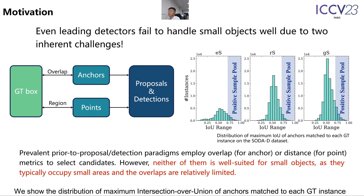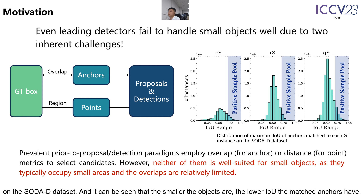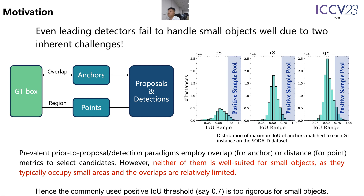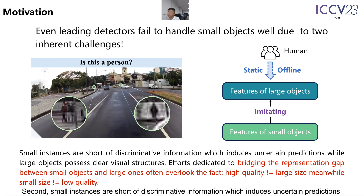We show the distribution of maximum intersection over union of anchors matched to each GT instance on the SODA-D dataset, and it can be seen that the smaller the objects are, the lower IOU the matched anchors have. Hence the commonly used positive IOU threshold, say 0.7, is too rigorous for small objects.